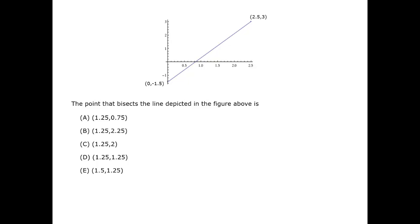The average of 2.5 and 0 is 1.25, so that is the x-coordinate of the midpoint. The average of 3 and negative 1.5 is their sum divided by 2, which is 0.75. Therefore, the correct answer is A.